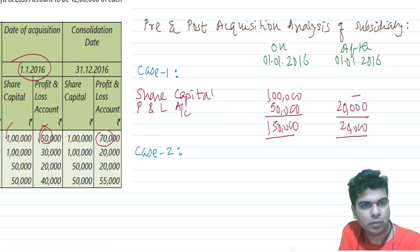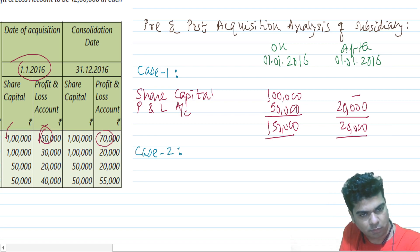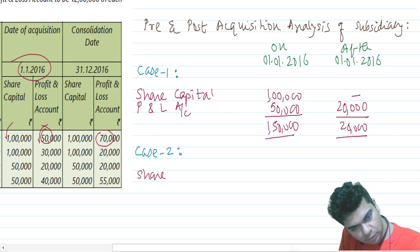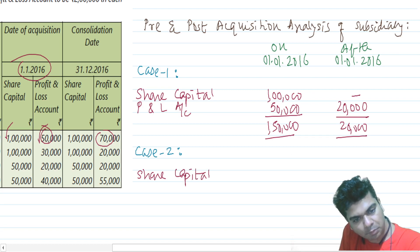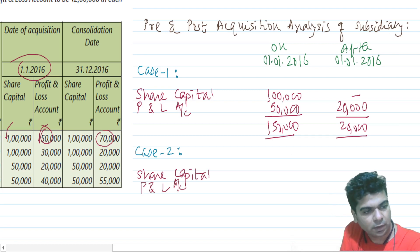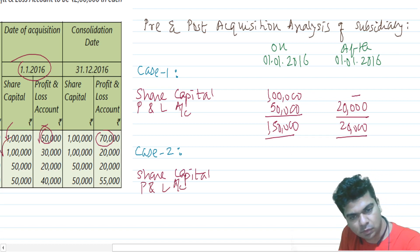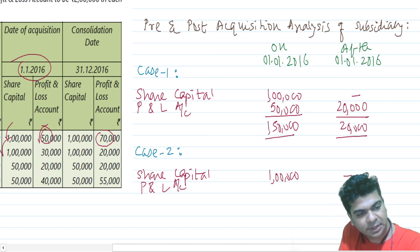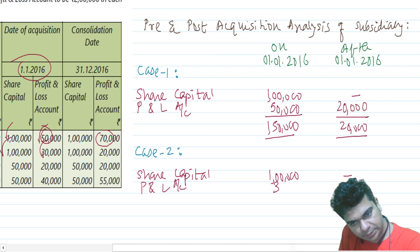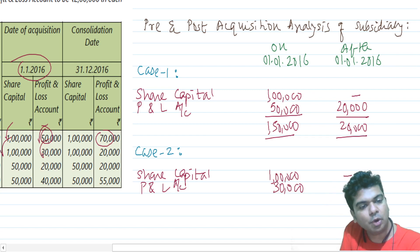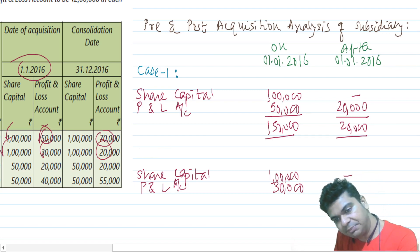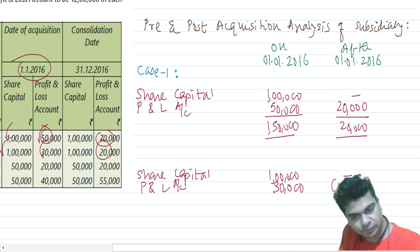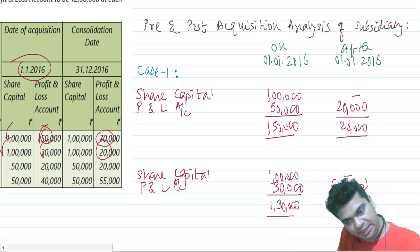Case 2: Share capital is 1 lakh, P&L on 1st January is 30,000 — total 1 lakh 30,000. On 31st December, P&L has become 20,000, meaning there is a reduction of 10,000. So the post-acquisition change is negative 10,000.